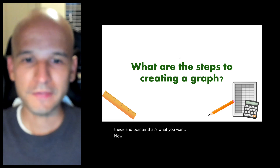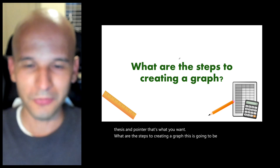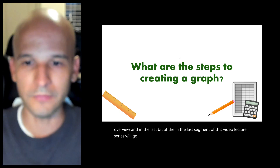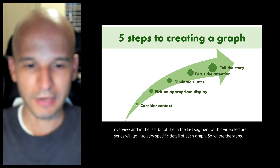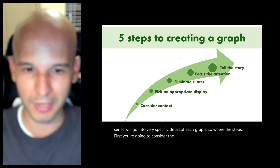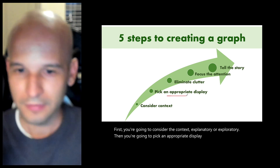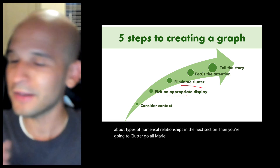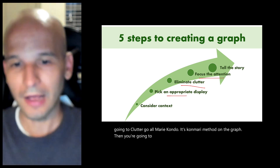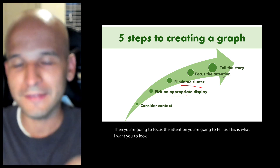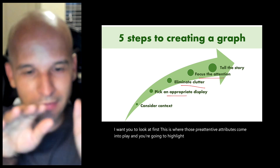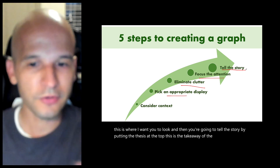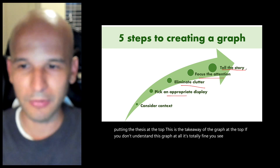What are the steps to creating a graph? This is the thousand-foot overview; the last segment will go into specific detail for each graph. First, consider the context — explanatory or exploratory. Then, pick an appropriate display. Next, eliminate clutter — go full KonMari method on the graph. Then, focus the attention: tell the audience this is what I want you to look at first, using pre-attentive attributes to highlight things. Finally, tell the story by putting the thesis at the top — the takeaway of the graph. Even if you don't understand the graph, you see the point at the top.